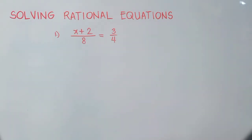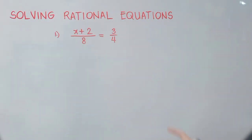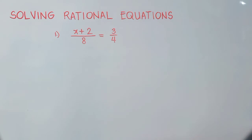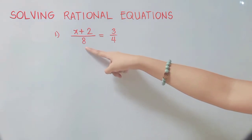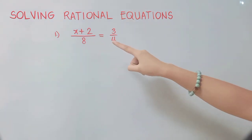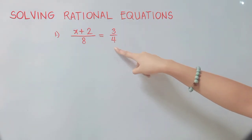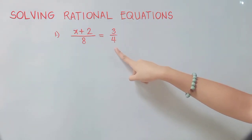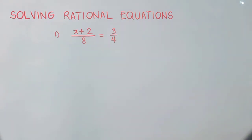We have here: (x + 2)/8 = 3/4. In this given, we won't be having any restrictions with the answers since our denominators are all constants.